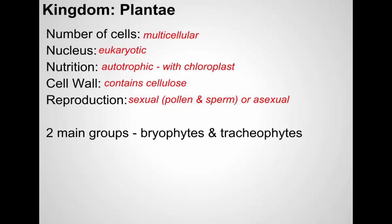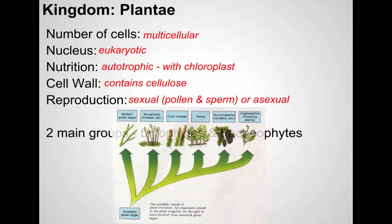There are really two main groups of plants: bryophytes and tracheophytes. If we look at their evolutionary history, they evolved from algae, and over time they diverged into various groups — including modern algae, then the bryophytes and mosses, ferns, conifers which we call gymnosperms, and angiosperms.